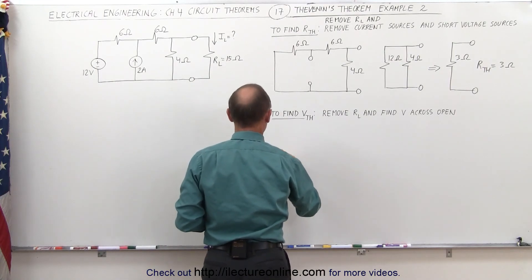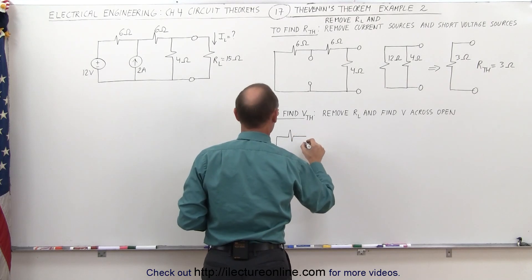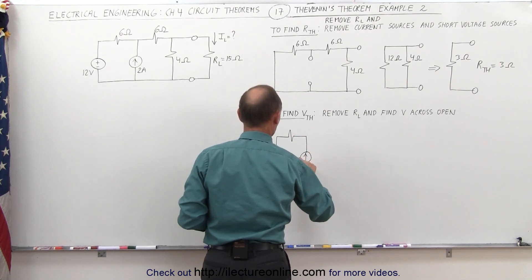So we still have the 12 volt voltage source. We have the 6 ohm resistor. We have the 2 amp source.